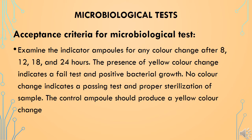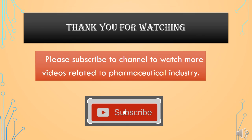Acceptance criteria for the microbiological test: examine the indicator ampoules for any color change after 8, 12, 18, and 24 hours. The presence of a yellow color change indicates a failed test and positive bacterial growth. No color change indicates a passing test and proper sterilization of the sample. The control ampoule should produce a yellow color change. These are the key qualification tests done for autoclave in the pharmaceutical industry.